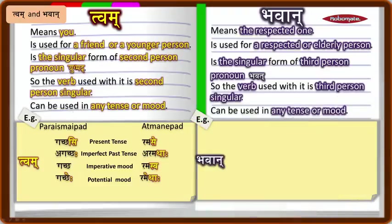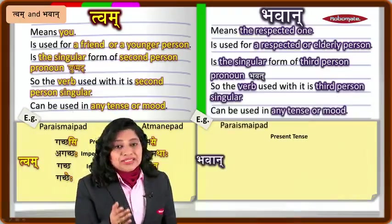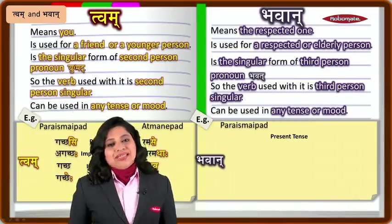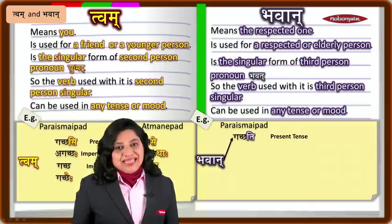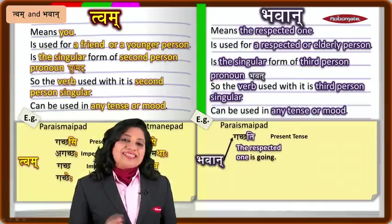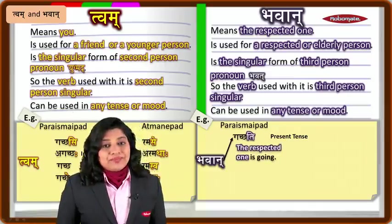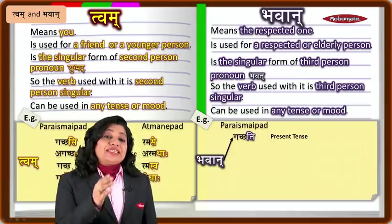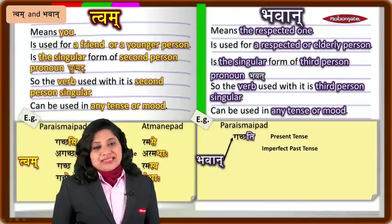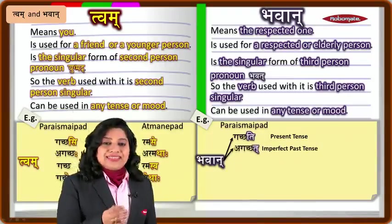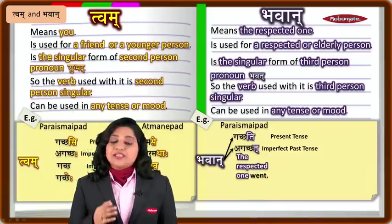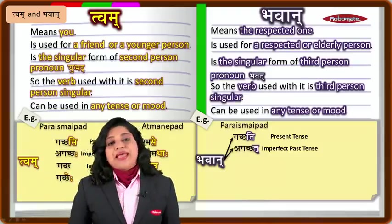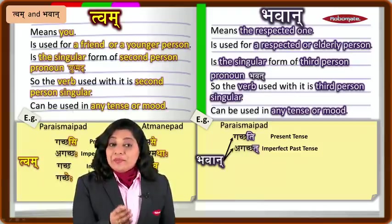For bhavan with a parasmaipada dhatu like gam — gaccha — in present tense: 'bhavan gacchati,' meaning 'the respected one is going.' In the imperfect past tense: 'bhavan agacchat,' meaning 'the respected one went.'